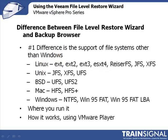So what's the difference between the File Level Restore Wizard and the Backup Browser? Previously in our Virtual Machine Restoration video, I showed you the Backup Browser — it's inside the Veeam Backup Console. You click Restore on the toolbar, it brings up a wizard, and one of the things you can select is to restore files. If you restore files using that option, you can only restore Windows files for Windows file systems using that Backup Browser. In this video, I'll show you a different method: the File Level Restore Wizard.